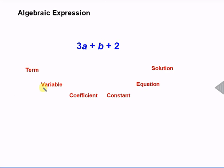One kind of term is a variable. We've talked about variables before. A variable is just a letter that stands in for a number. So a is a variable and b is a variable.